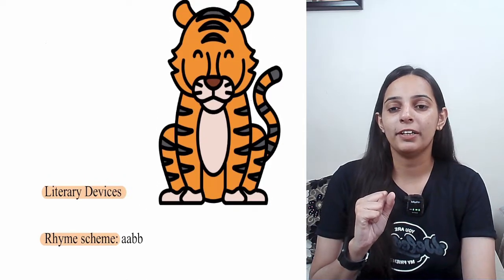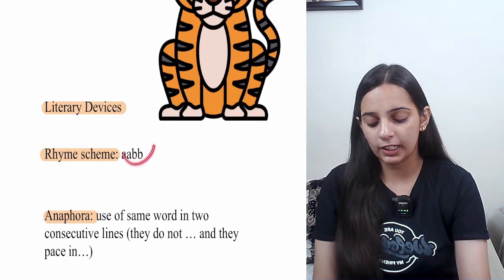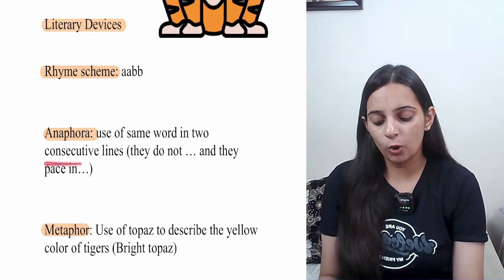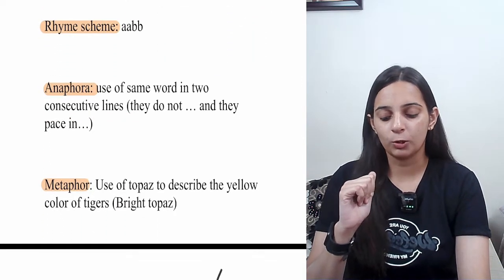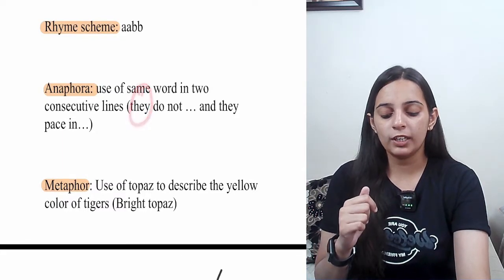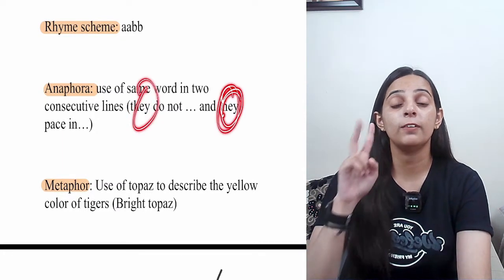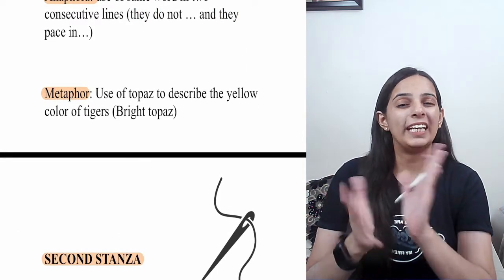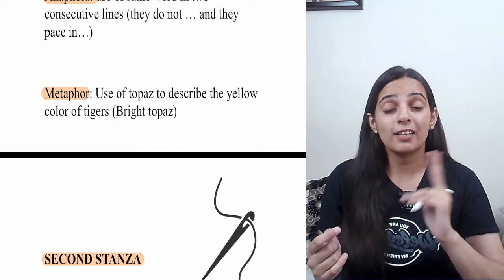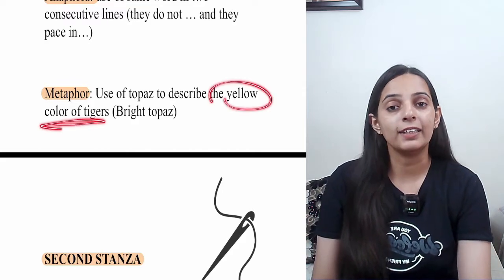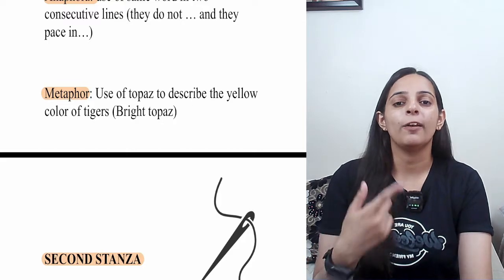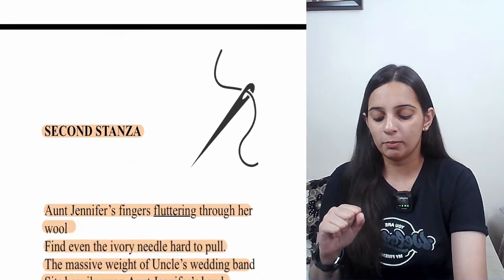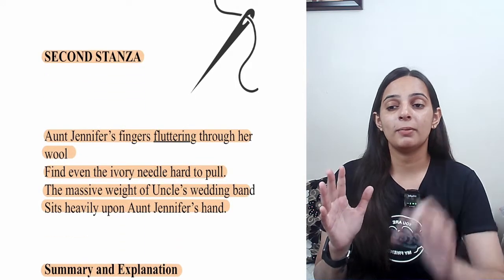Now let's look at the literary devices of the first stanza. The rhyming scheme is AABB — the two lines end with the same words. There is also a metaphor: the yellow color of the tigers is compared to the yellow color of a topaz stone.